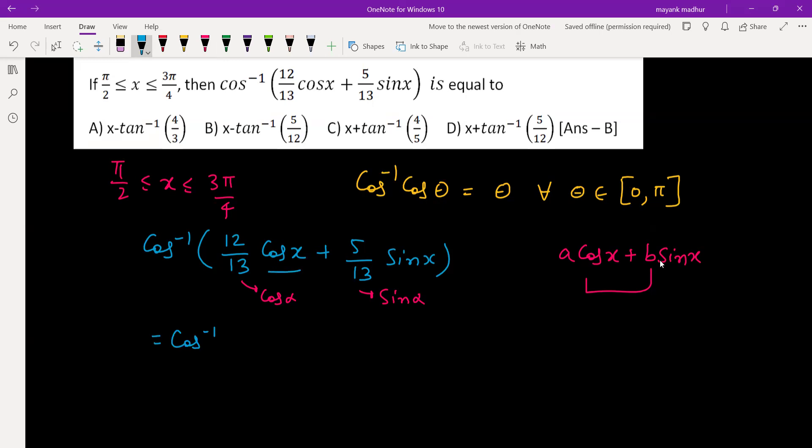So we'll be writing it as cos inverse of (cos α cos β + sin α sin β), which is cos of (α - β). Now x is in the interval π/2 to 3π/4, and what is this α? α is such that cos α is 12/13 and sin α is 5/13.